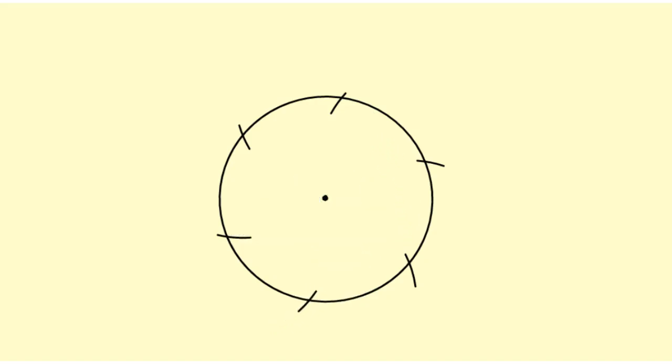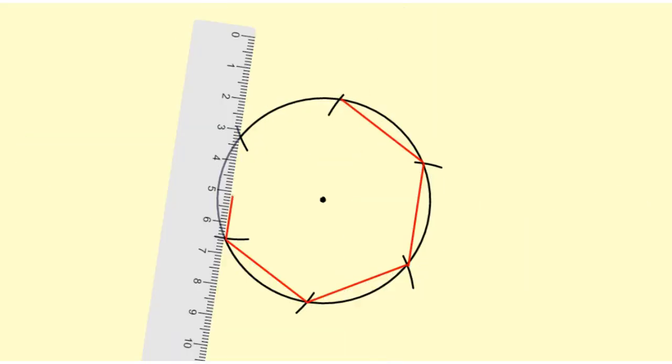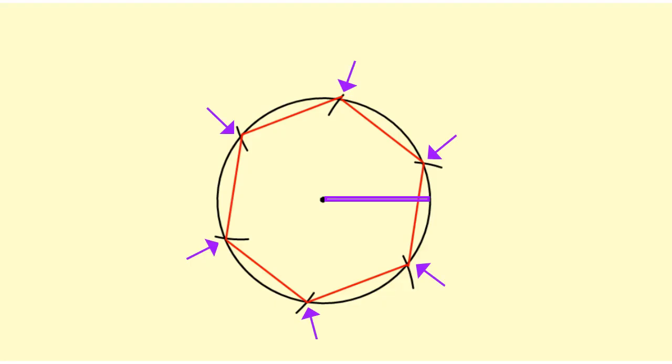Once you finish, those points of intersection will be the vertices of your regular hexagon. So just take your ruler and connect them. As long as you use the radius to mark off the arcs along the circle, you will get a regular hexagon.